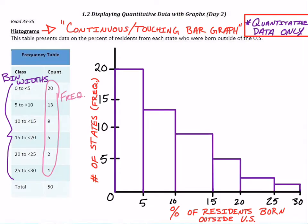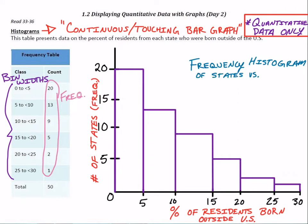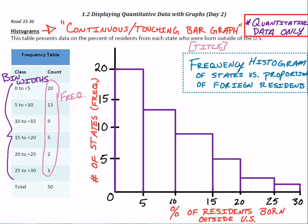I'm going to make a title for this graph. The AP exam isn't going to grade for this, but just to be thorough, let's give this one a title. This is a frequency histogram — not relative frequency, since we used counts rather than percentages. This is a frequency histogram of states versus the proportion of foreign residents.